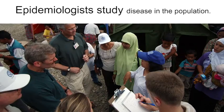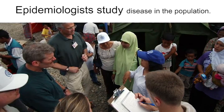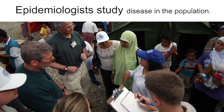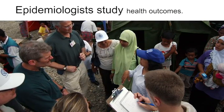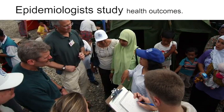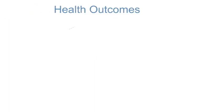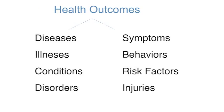Epidemiologists study diseases in the population. Here's an example of an epidemiologist collecting data with in-person interviews. In addition to diseases, epidemiologists also study health outcomes in the population. Health outcomes is a broad term that can include diseases, illnesses, conditions, disorders, symptoms, behaviors, risk factors, and injuries.